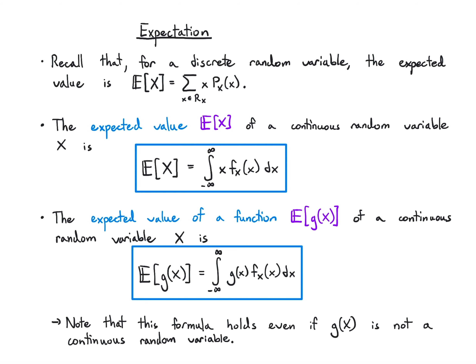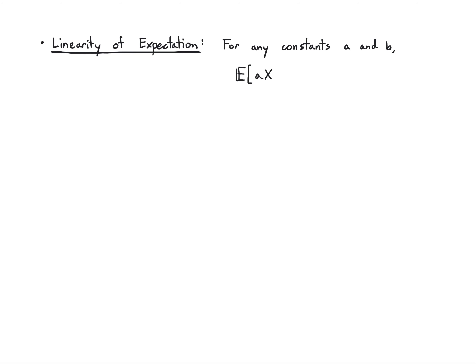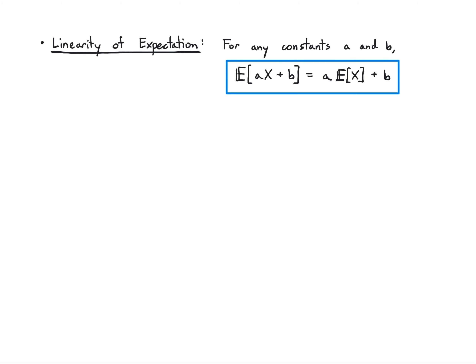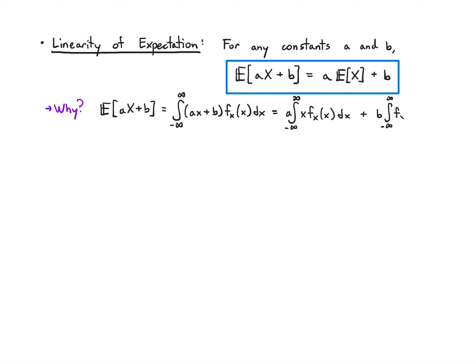Let's do some properties before we jump into examples. Linearity of expectation: if I have constants a and b and take the expectation of ax plus b, I can pull out the a and b. Looking at the definition, I plug ax plus b into the expectation formula and split the integral into two parts — pulling out a from the first and b from the second. The first integral is recognized as the expectation, and the second integral equals one by normalization. That's why the formula works: E[aX + b] = aE[X] + b.